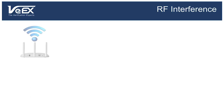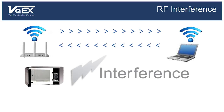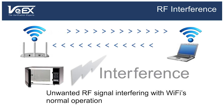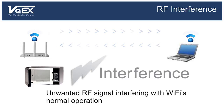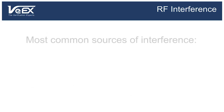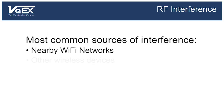By definition, interference is any unwanted RF signal that disrupts Wi-Fi's normal operation. The impact of that interference can range from lower data speeds to complete signal loss, depending on the nature and severity of the source. The two primary sources of interference you're likely to encounter are other nearby Wi-Fi networks and interference from other devices.